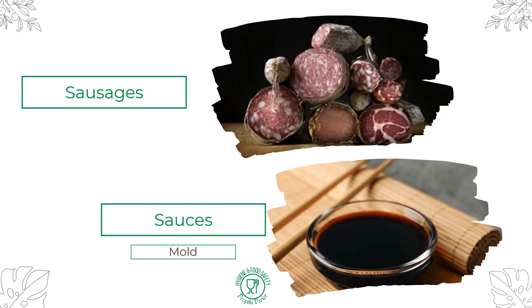We also have fermented sausages and sauces like soy sauce. Sausages such as salami or chorizo are examples of fermented or cured sausages, where fermentative bacteria act upon the meat to give rise to a unique and distinct flavor. Soy sauce is an example of a sauce produced by the action of mold — specifically Aspergillus species. Soy sauce is produced by cooking soybeans, mixing them with roasted wheat, and then introducing the mold, which produces the distinct flavor and aroma characteristic of soy sauce.